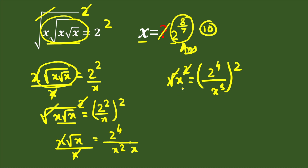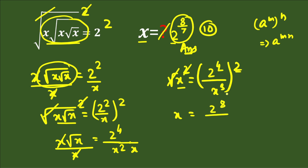After squaring, the square root cancels on the left, leaving x equal to 2 to the power of 8 — since we multiply the powers — divided by x cubed raised to the power of 2. Multiplying 3 and 2 gives 6, so the denominator is x to the power of 6.